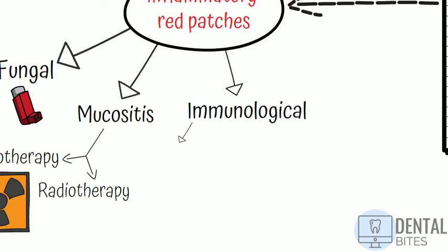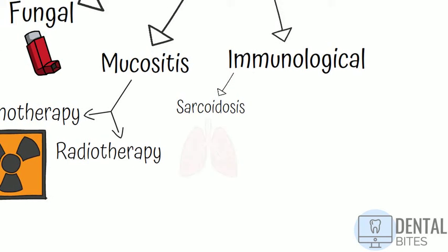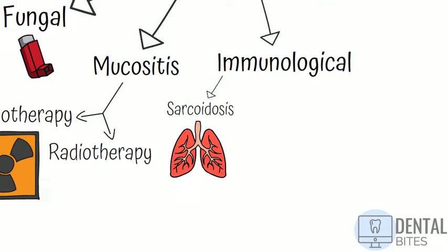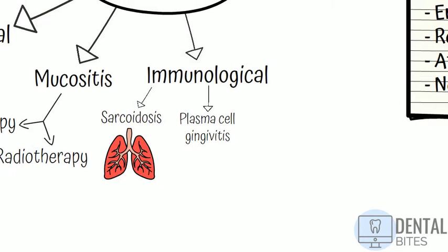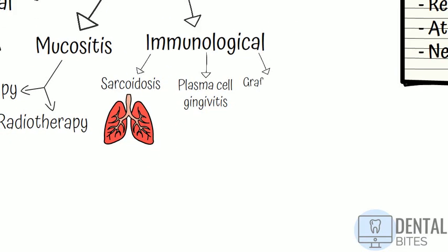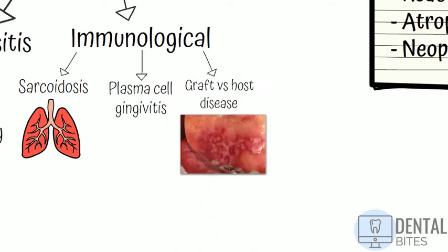The last type of inflammatory red patch we're going to talk about are the immunological types — for example sarcoidosis, a rare autoimmune condition which typically affects the lungs and skin and can cause red inflammatory lesions in the mouth. Also plasma cell gingivitis, which is quite rare. It's where you have generalised erythema and swelling of the attached gingiva, thought to be caused by a hypersensitivity reaction to some kind of antigen. There's also graft versus host disease, which can happen in patients who've received stem cell or bone marrow transplants. T-cells in the donated stem cells or bone marrow attack the patient's own body cells because the donated cells — i.e. the graft — see the host body cells as foreign and attack them, and so you can get this appearance in the mouth.